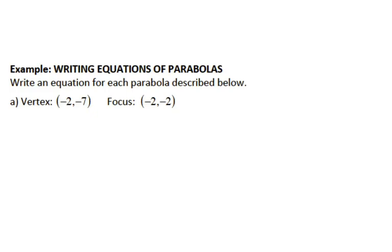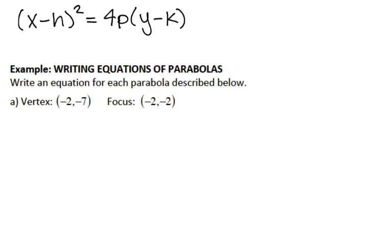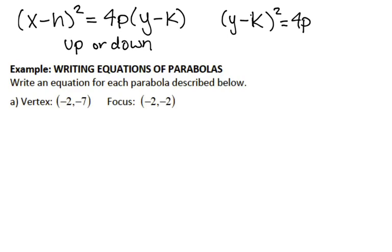Here is our first example. Before we actually start, at the very top I'm going to write our forms for the equation. We have two forms for our parabolic equations. We have x minus h quantity squared equals 4p times y minus k — these are for parabolas that open up or down. We also have y minus k quantity squared equals 4p times x minus h, and this is for parabolas that open to the right or to the left.